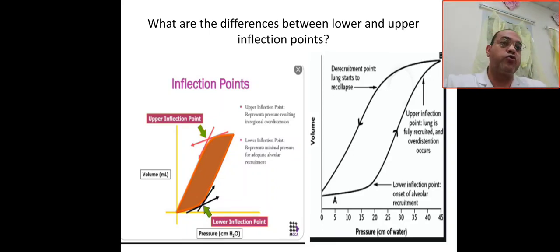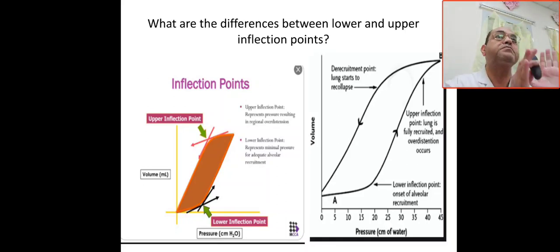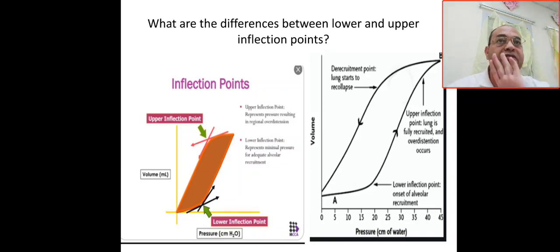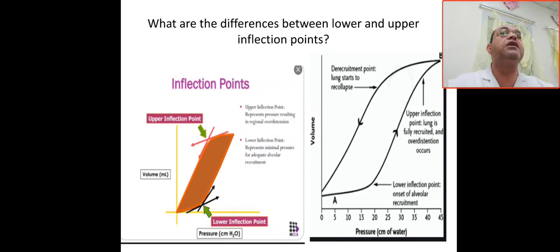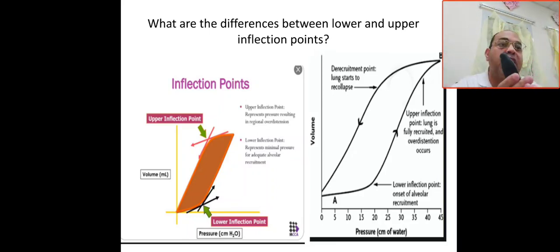The benefit of knowing the lower and upper inflection points is to set PEEP at the level of the lower inflection point. This is recommended to optimize alveolar recruitment and prevent repeated opening and closing of the alveoli, which leads to shear injury, barotrauma, and biotrauma.